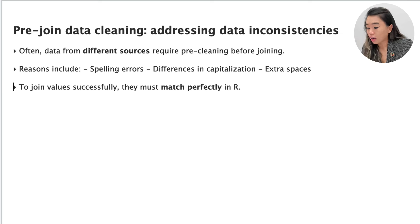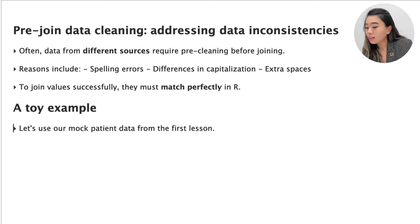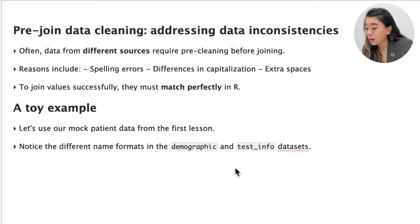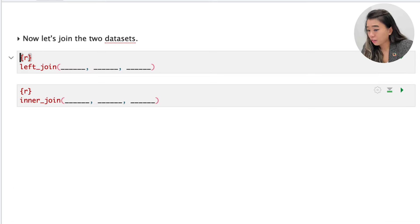In order to join values, we need them to match perfectly in R. If there are any differences, R will consider them to be different values. To illustrate this, let's return to our mock patient data from the first lesson on joining. We had two data frames — one called 'demographic' and the other called 'test_info' — but we'll change 'Alice' starting with an uppercase A to 'alice' with a lowercase a.